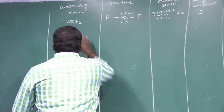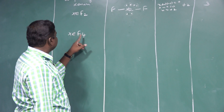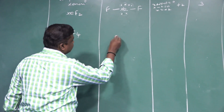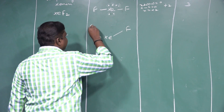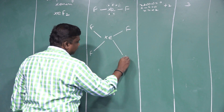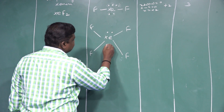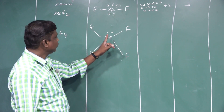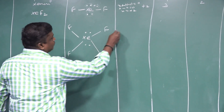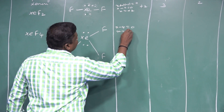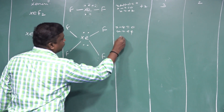Second compound: XeF4 (xenon tetrafluoride). Structure has xenon with 8 electrons total. To calculate oxidation state: x + 4×(−1) = 0, so x − 4 = 0, giving x = +4 oxidation state for xenon tetrafluoride.